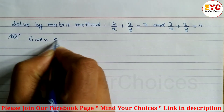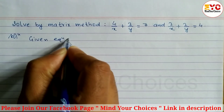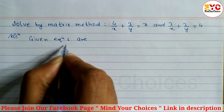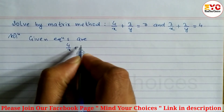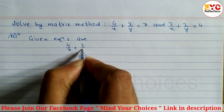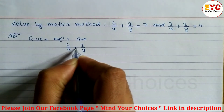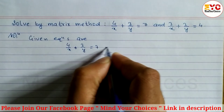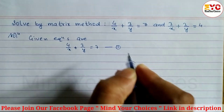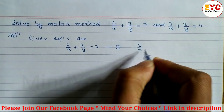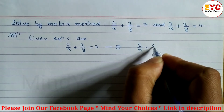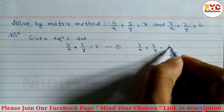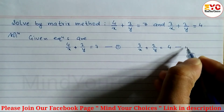The given equations are: Equation 1 is 4/x + 3/y = 7, and Equation 2 is 3/x + 2/y = 4.